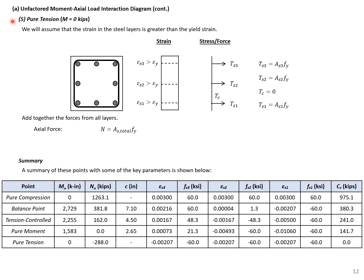The pure tension point has no moment and only tension forces. We assume strain exceeds yield at all layers and a constant strain profile across the section. There is no concrete tension force. The total axial force is simply all steel in tension: 8 bars × 0.6 in² × 60 ksi = 288 kips, negative to represent tension.